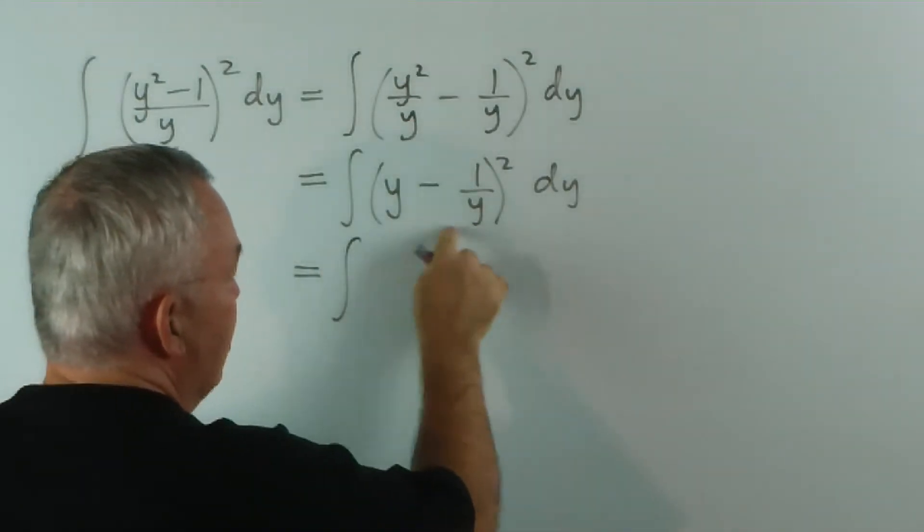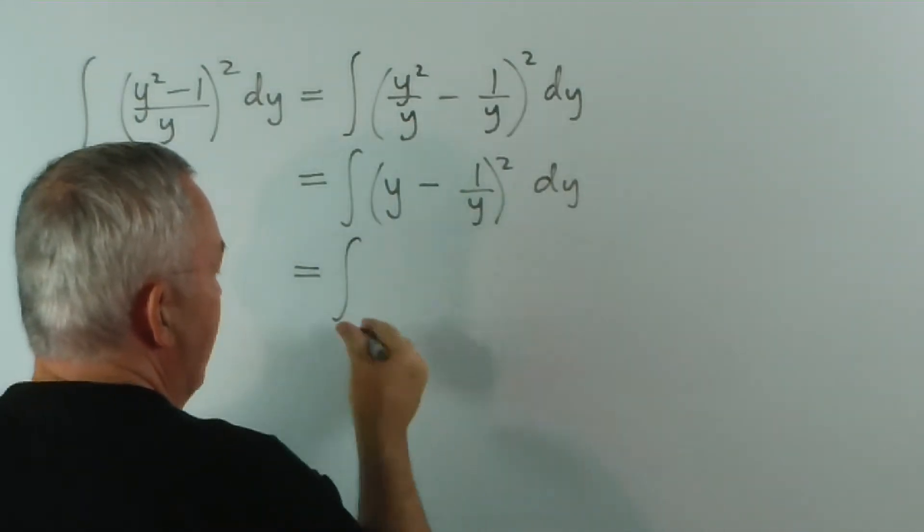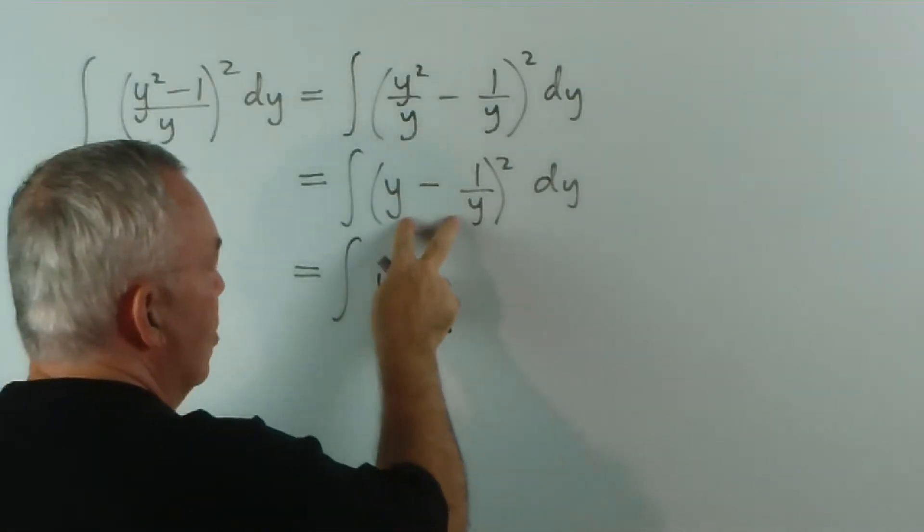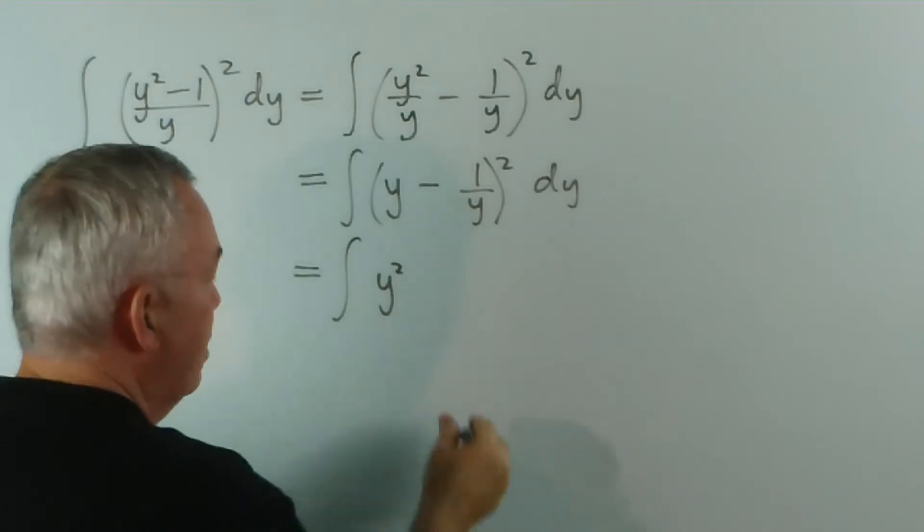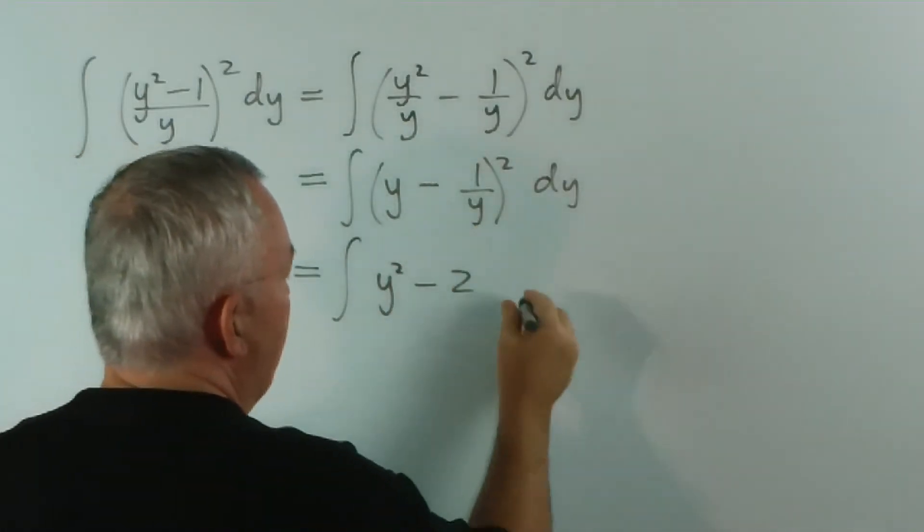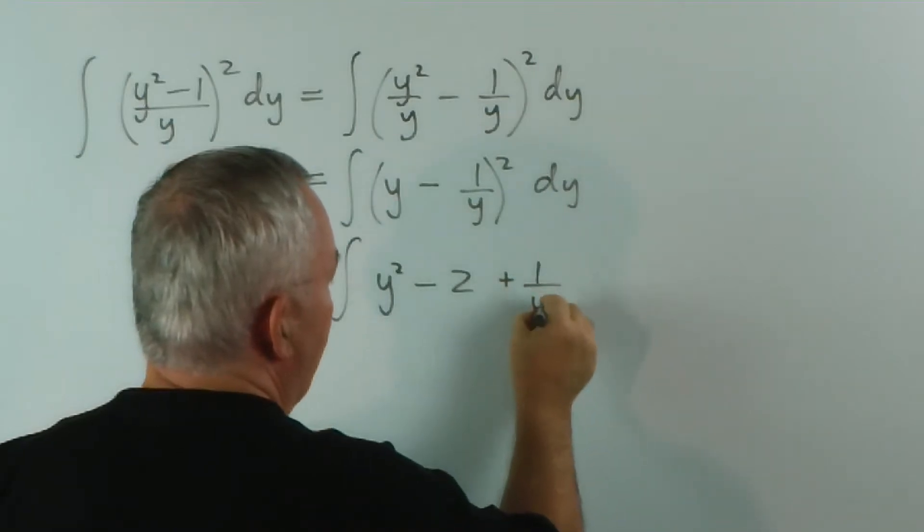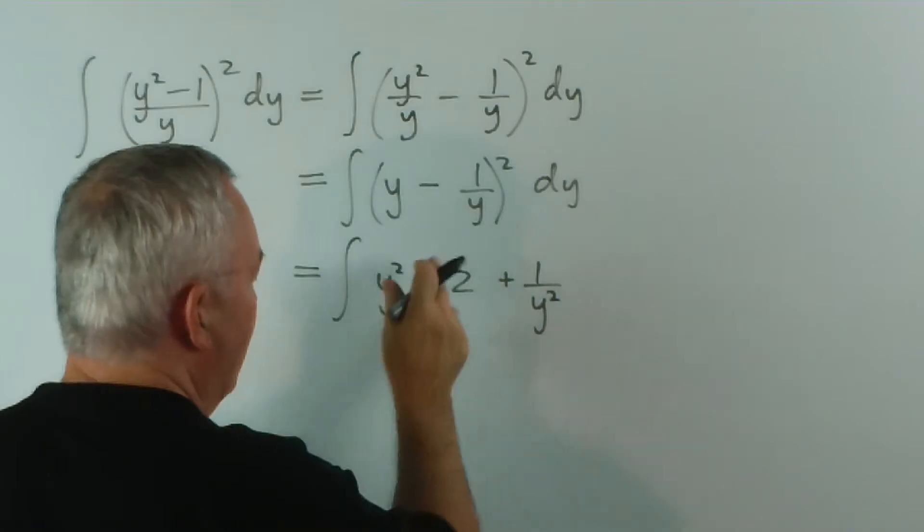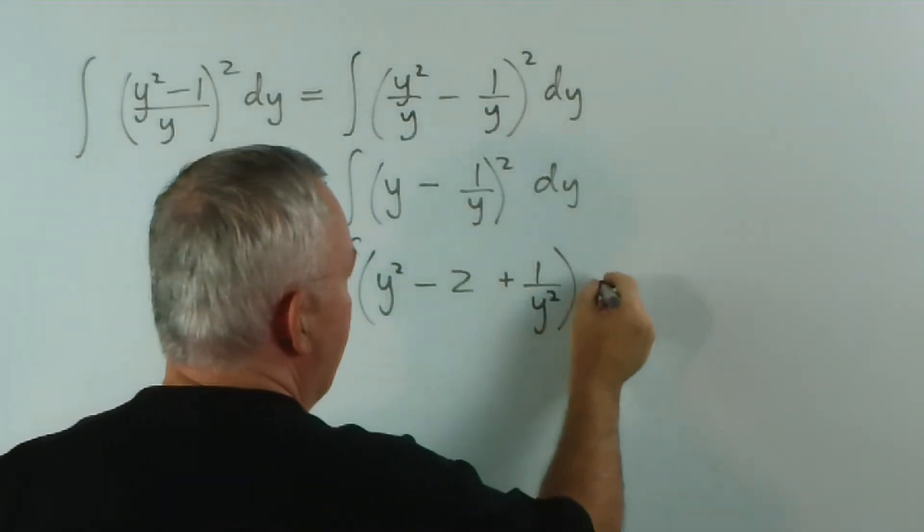And if I expand this, this is a perfect square. So I square the first, get y squared. I double the product. Now, interestingly, y times 1 on y is 1, so doubling that gives me that. And then I square the last, which by the way, oh no, I'll leave it like that. I'll do that in the next step.